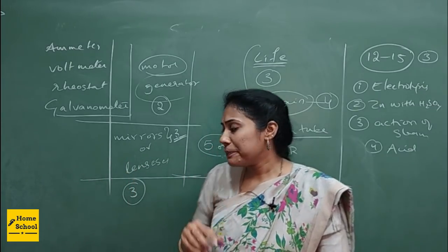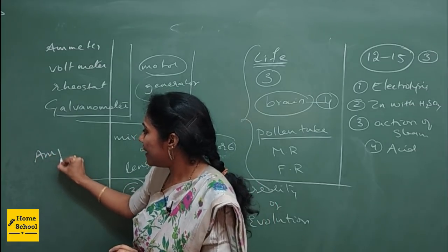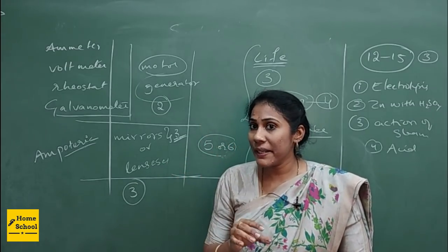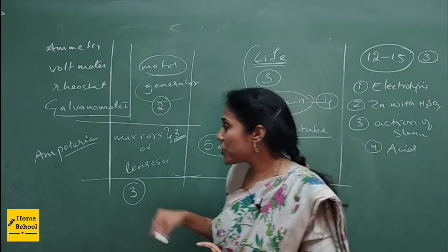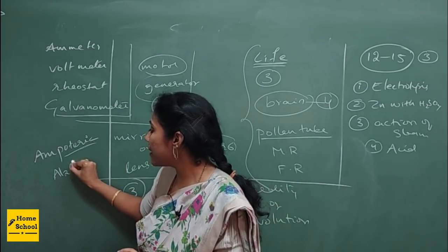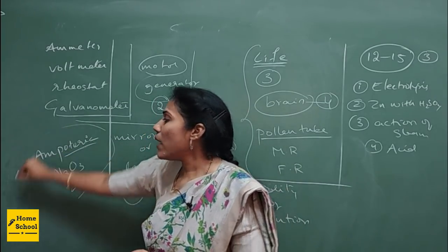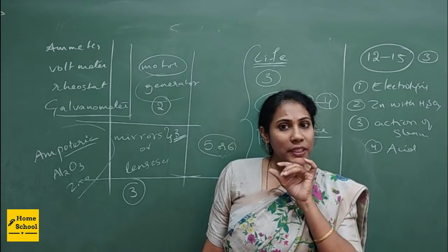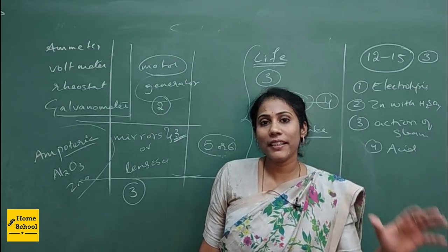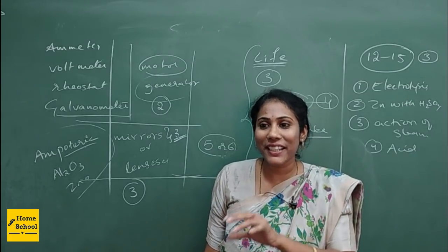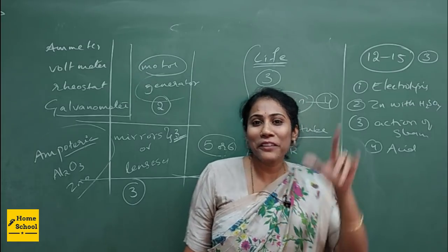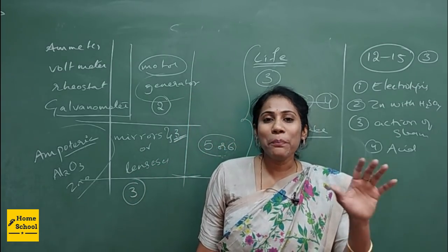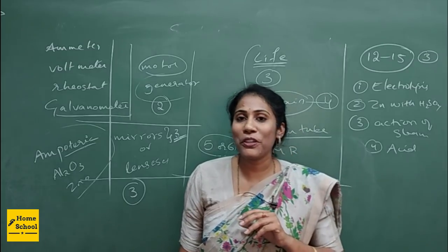Coming to chemistry — amphoteric oxides are the oxides which can react with both acids and bases. The examples are Al₂O₃ and ZnO. This is one important concept on which an MCQ question can be designed. Also, displacement reactions are very important — I have a beautiful trick for displacement reactions which I will share after your preparatory examination in my free live class. So these are the important points I am sharing for tomorrow's examination.